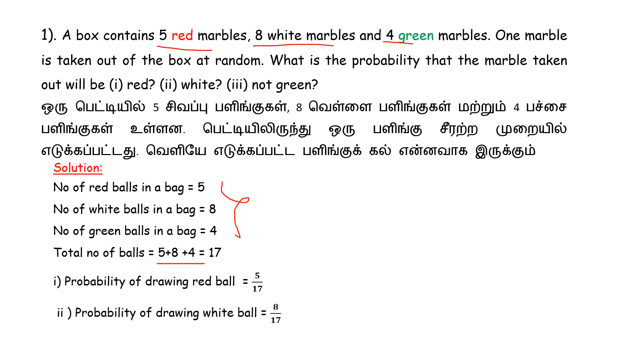Next, the probability of drawing a white ball. The number of white balls is 8. So the probability is 8 divided by the total number of balls, which is 17.